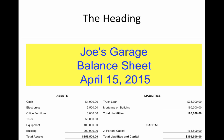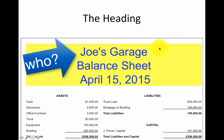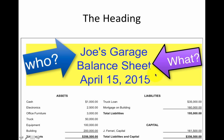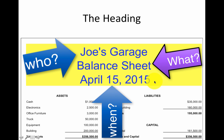In the heading, the heading always uses three words to describe what we are making. It's always the who, the what, and the when. In this case, who is it? It's for Joe's Garage — notice it's not for Joe himself because we're doing it for his garage. The second, the what, is the balance sheet — that's what we're making. And finally, the date on which we made the balance sheet.